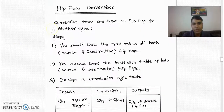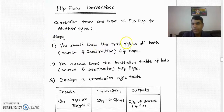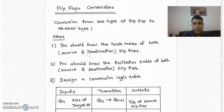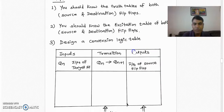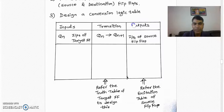While converting one flip-flop to another flip-flop, we use the following steps. The first step is we should know the truth table of both the flip-flops — source flip-flop as well as destination flip-flop. It means we should know the behavior of both the flip-flops. Second, we should know the excitation table of both the flip-flops, source as well as destination. Third, we have to design a conversion logic table.